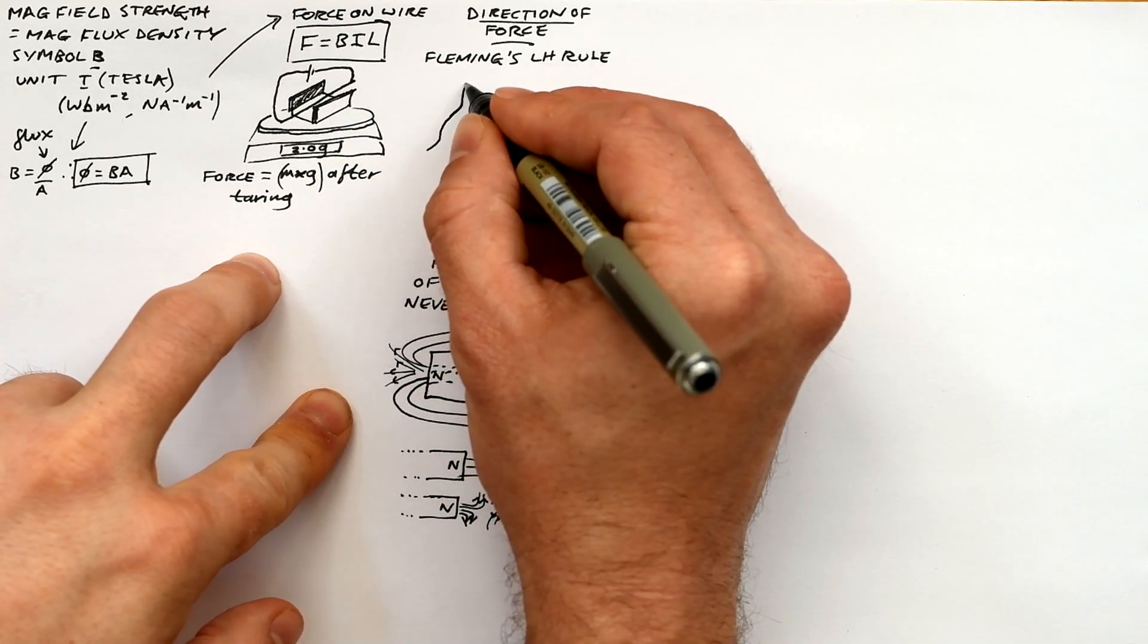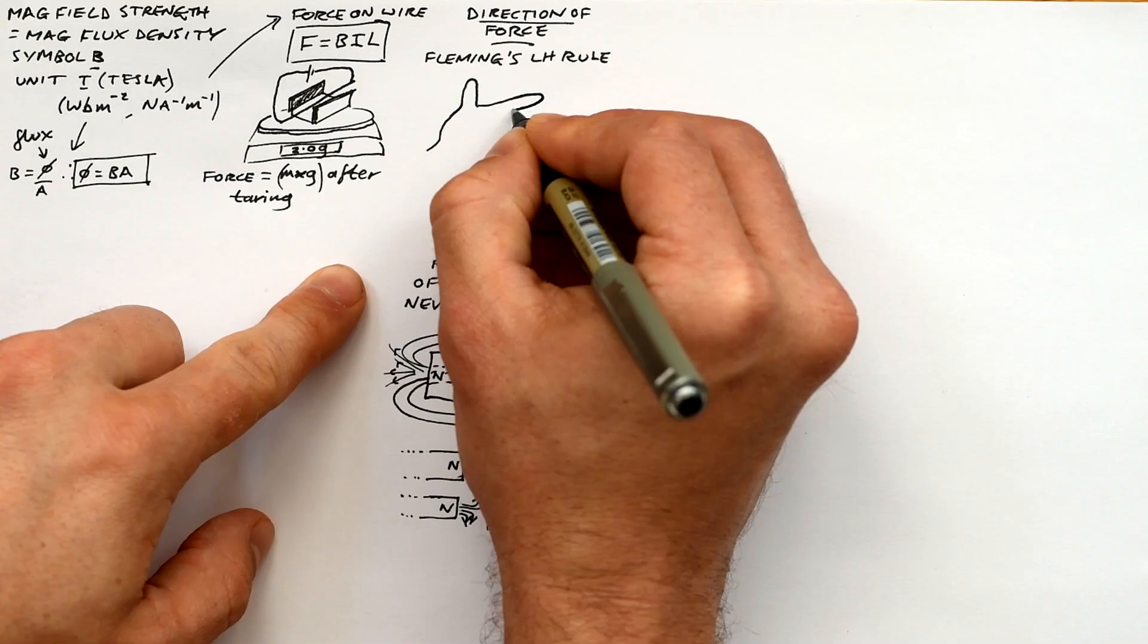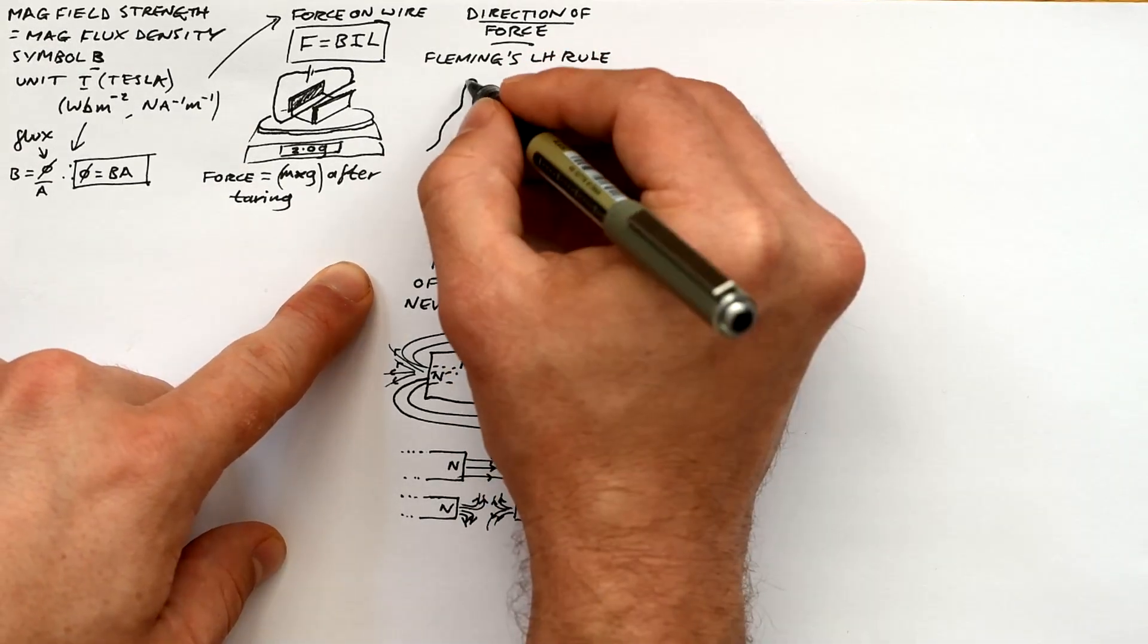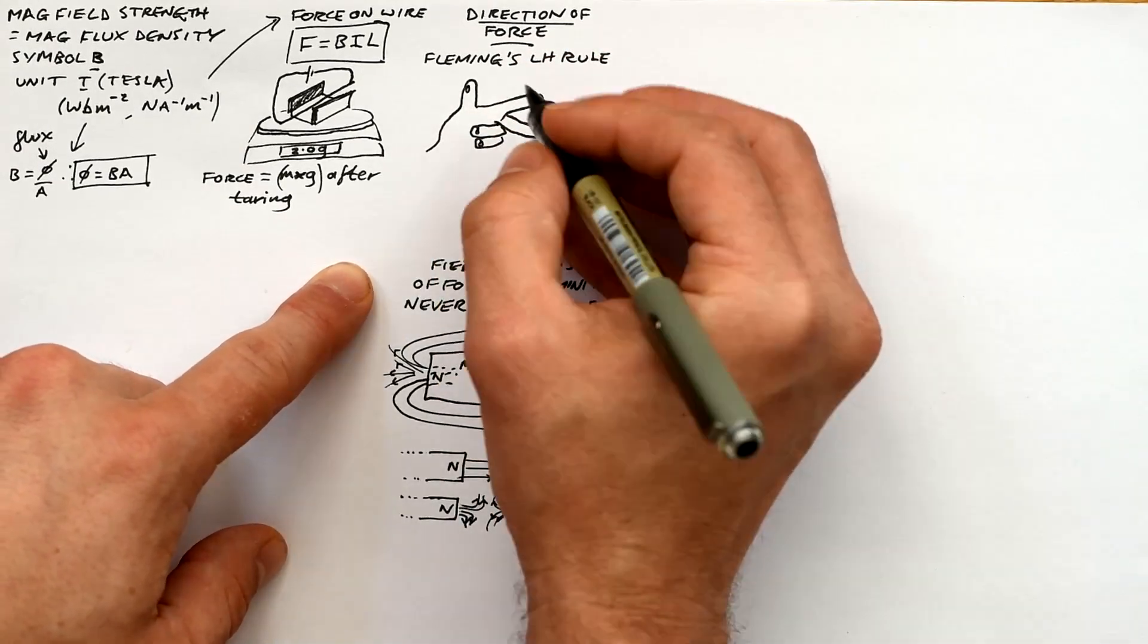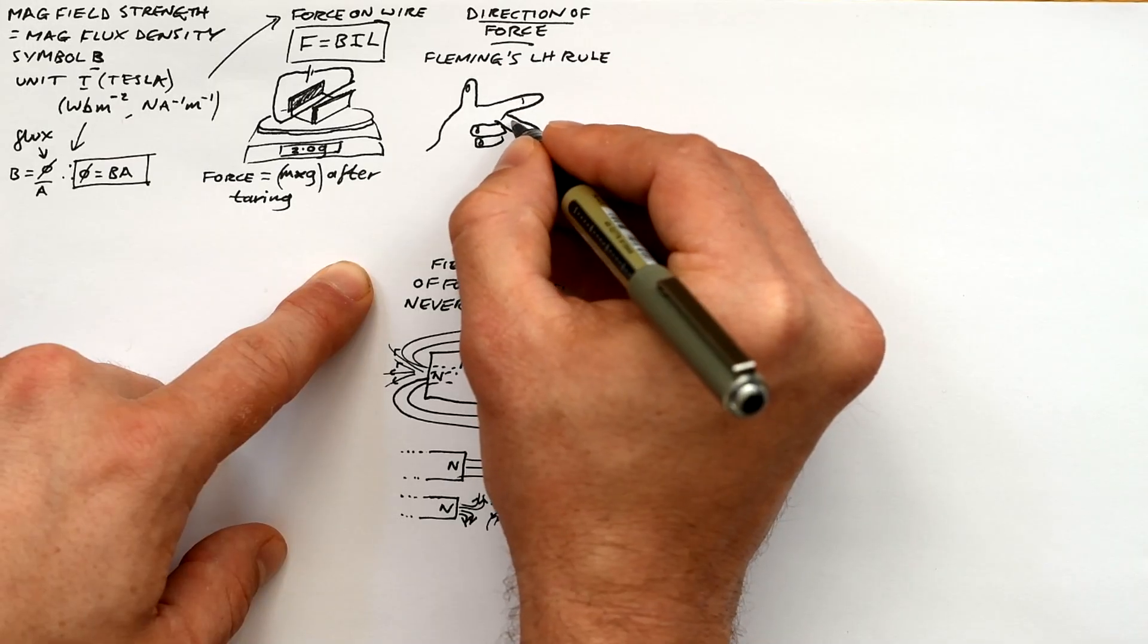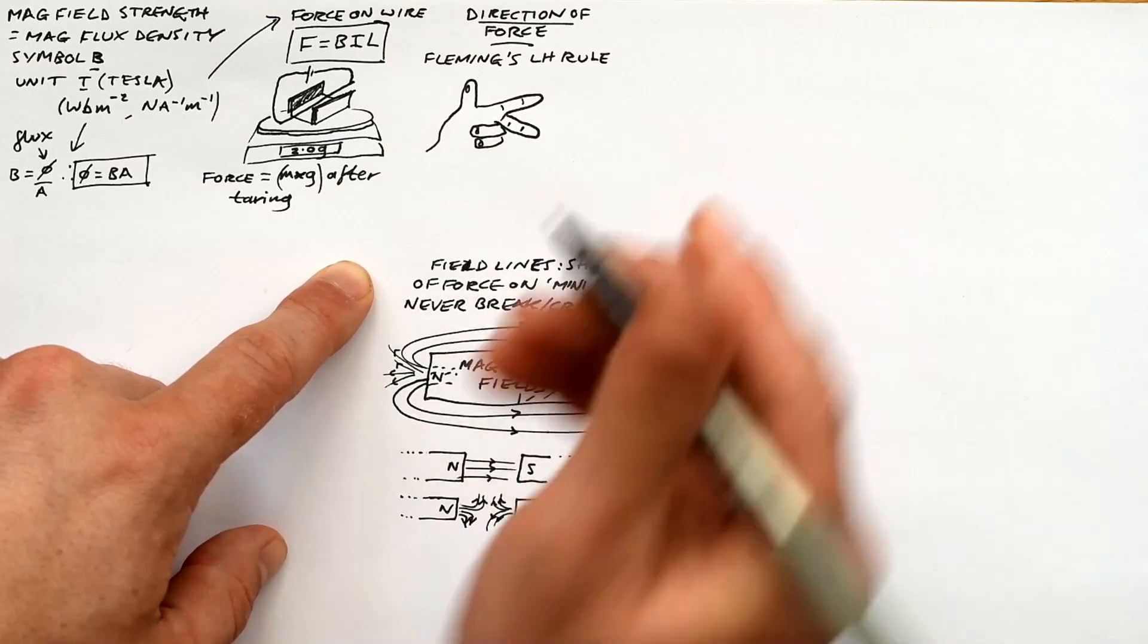So we also need to know what the direction of the force is going to be and that's where Fleming's left-hand rule comes in. People always take the mick out of my left hand so I'm going to try and do a good job this time. I'm actually pretty proud of that one, I think that's probably the best I've ever drawn.